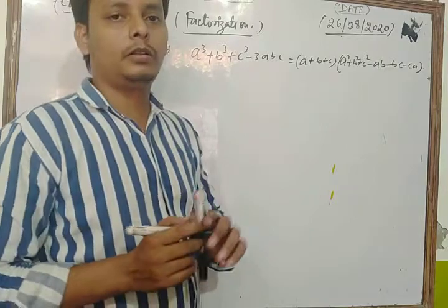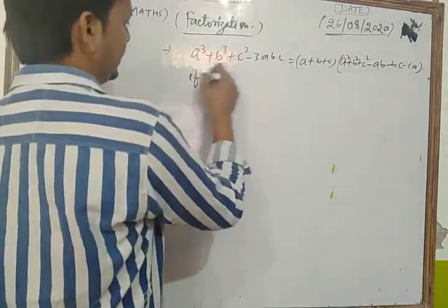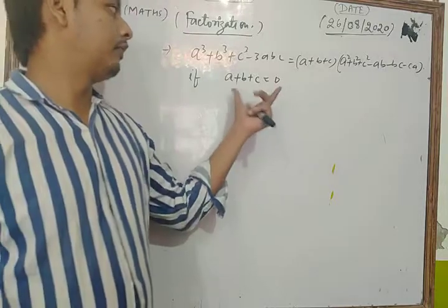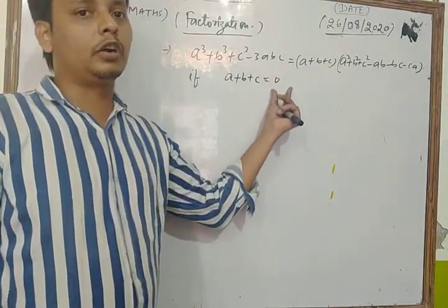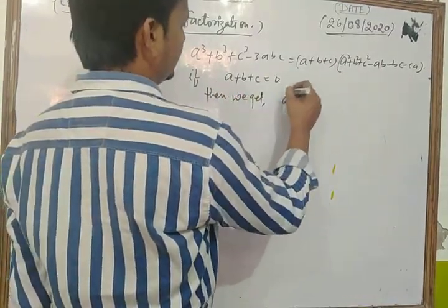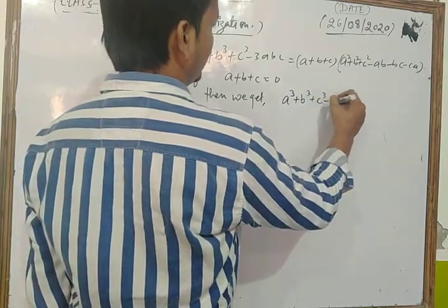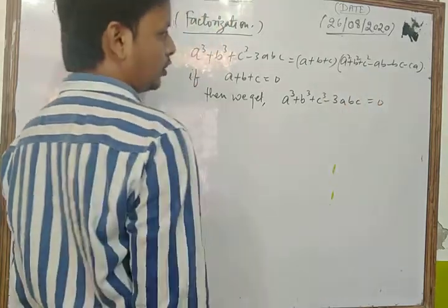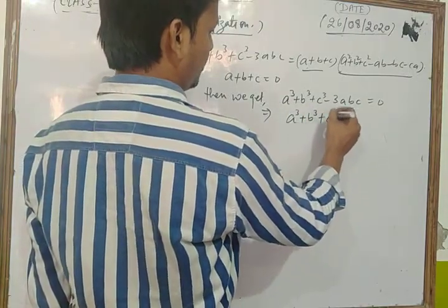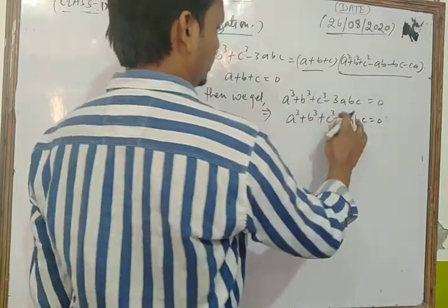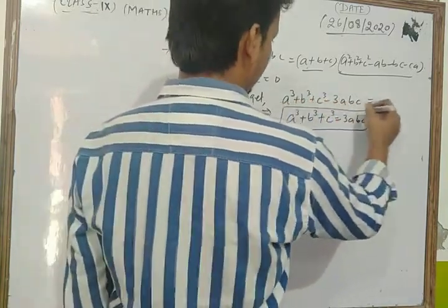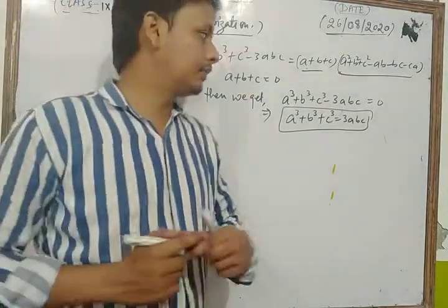One important thing about that identity: if the value of a + b + c is equal to 0, then from this identity we get a³ + b³ + c³ - 3abc = 0, which means a³ + b³ + c³ = 3abc. This is a very important result we get from this identity.